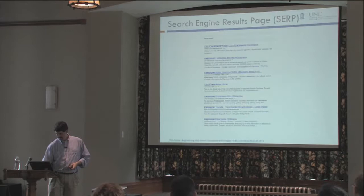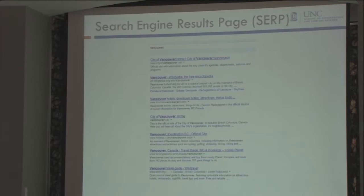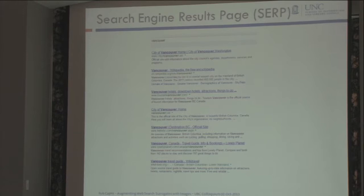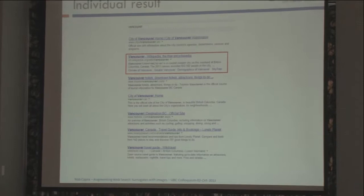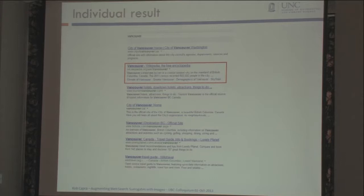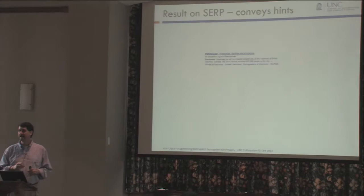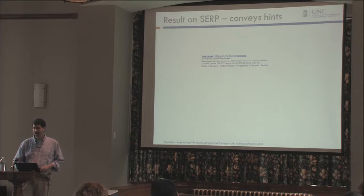This is a search engine result page. When you issue a search, this is what you get back — sometimes we call it the ten blue links. We'll call this a SERP, search engine result page, in the parlance. I want to point out a few things about these SERPs. They consist of individual results. Here's a search I did for Vancouver in preparation for the trip, and here's a particular entry on Wikipedia — that's one result.